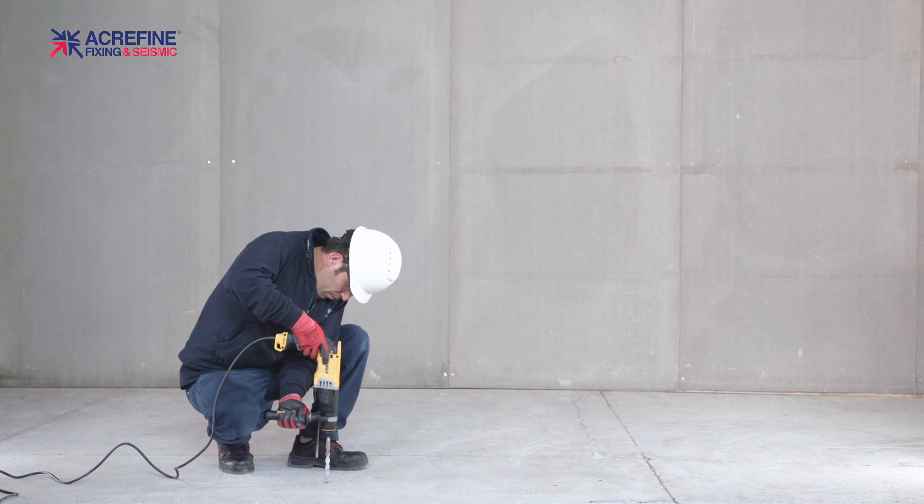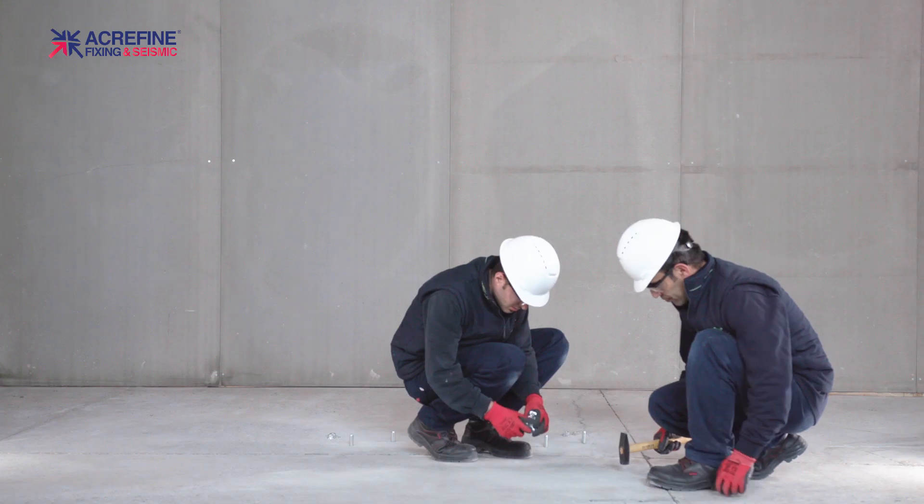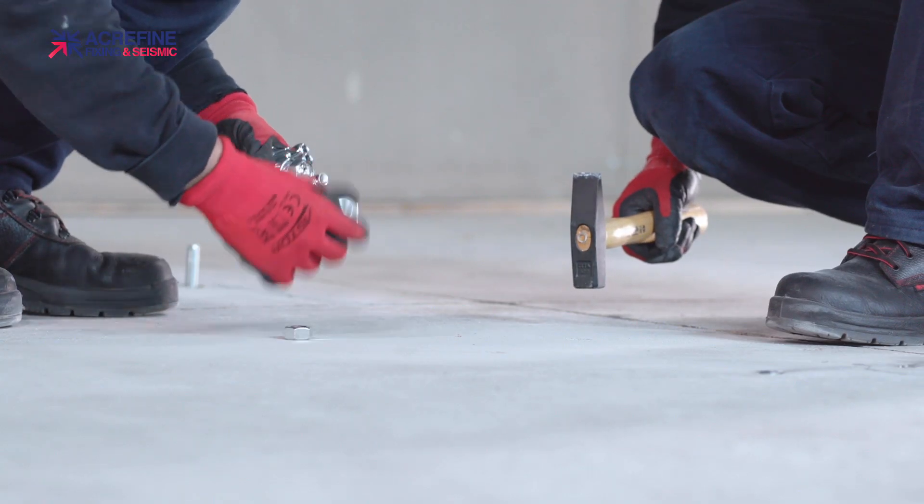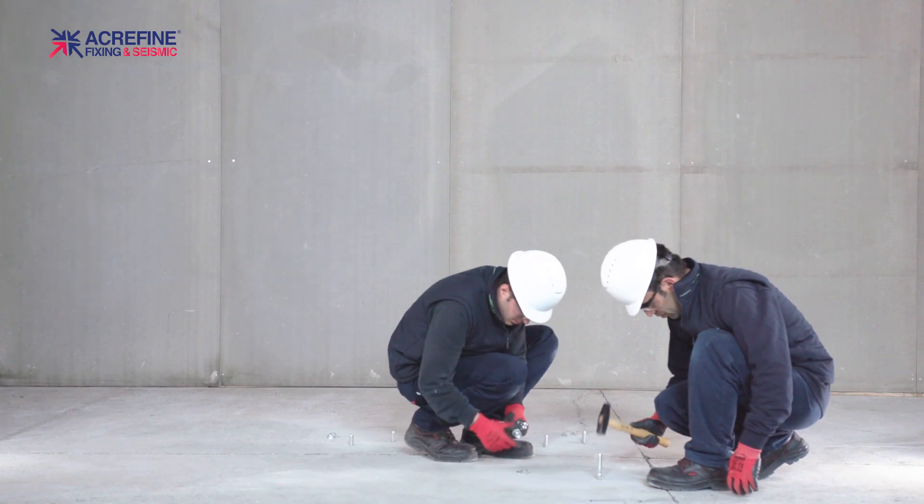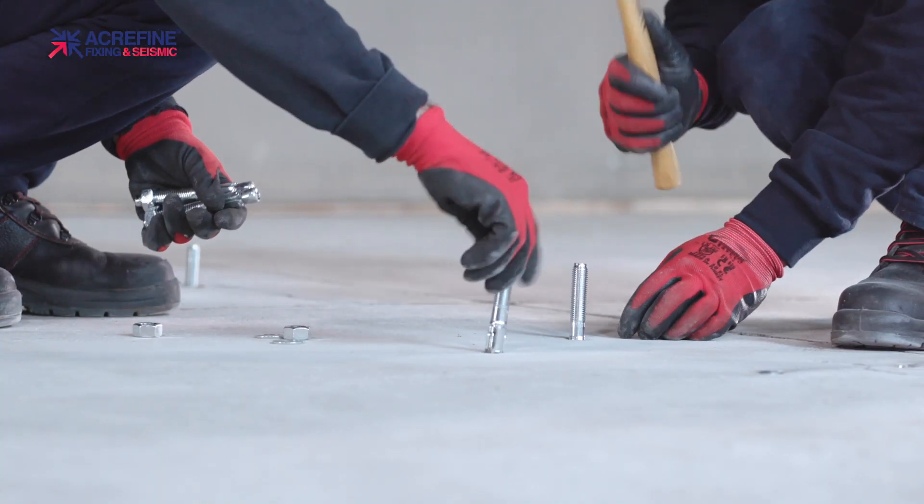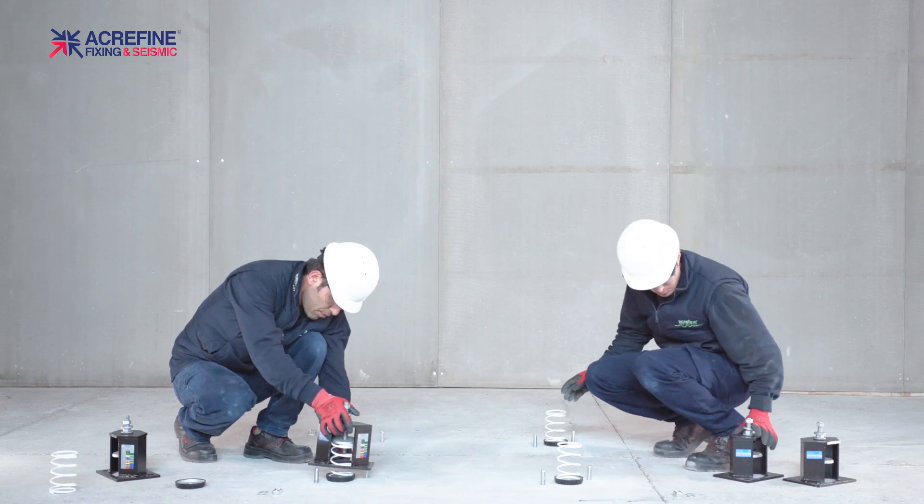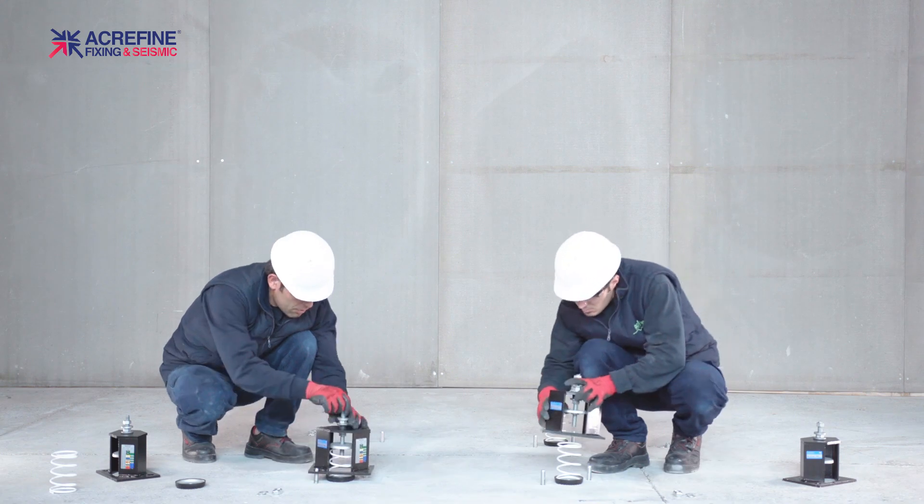Drill the holes and place the anchors. Make sure the bolts are long enough for the washer and nut to fix it. Turn the spring cap until it reaches the middle of the studs lower part.